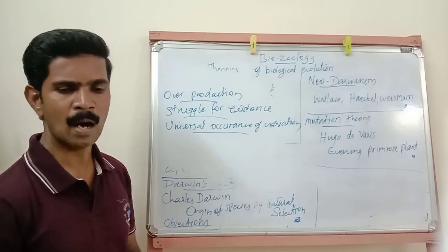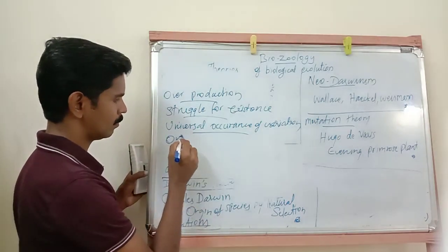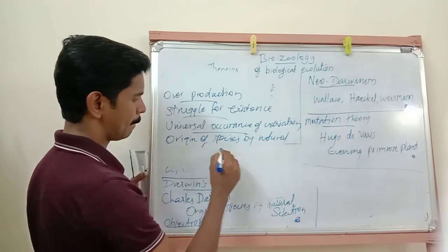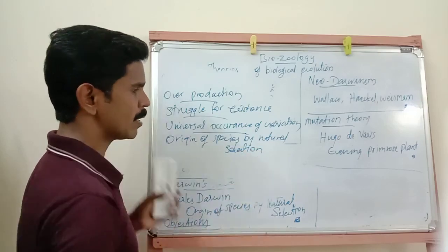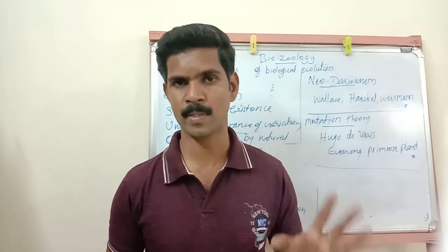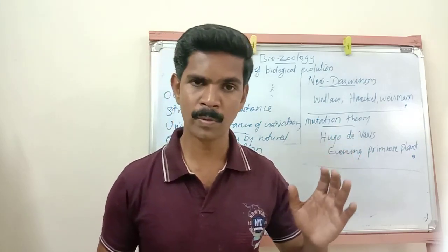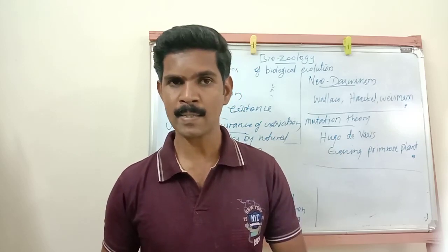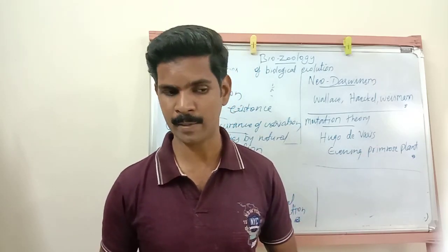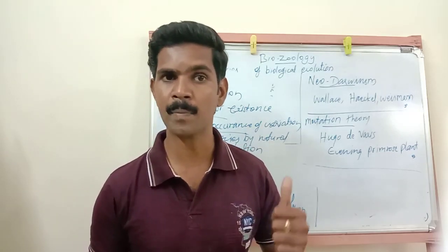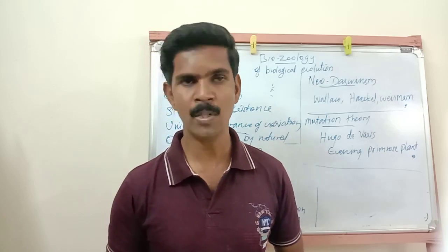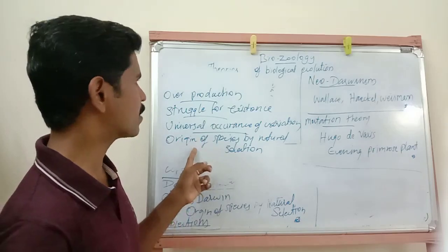The fourth fact is the Origin of Species by Natural Selection. According to this, nature is a powerful selective force. Organisms with adaptation power can face their problems and live as the fittest. They become adapted to changed environments and can survive in them. These are the four important facts or elements of Darwinism theory.